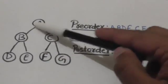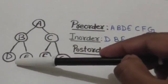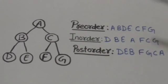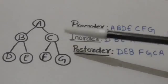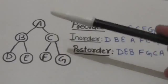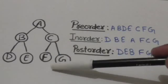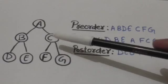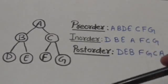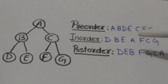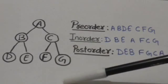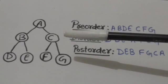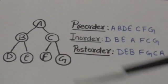After the in-order traversal of the left subtree of node A, node A is processed, and after this the right subtree of node A is traversed in in-order. Root of the right subtree of node A is node C. So first, the left subtree of node C will be traversed in in-order. Left subtree of node C contains only one node, that is F, so node F will be processed. After this, node C will be processed, and then the right subtree of node C will be traversed in in-order. Right subtree of node C contains only one node, that is node G, so node G will be processed.